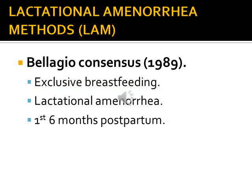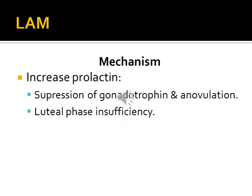Lactational amenorrhea is the last natural method and is considered the most effective and most suitable in developing countries. In 1989, in the Bellagio city consensus, lactation was recognized as contraception under three criteria: first, exclusive breastfeeding; second, lactational amenorrhea — no menstrual periods; and third, only within the first six months postpartum. The mechanism works through increased prolactin, which suppresses gonadotropins and ovulation, and causes luteal phase insufficiency.